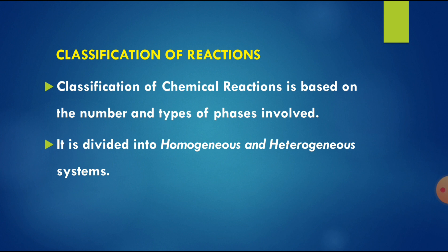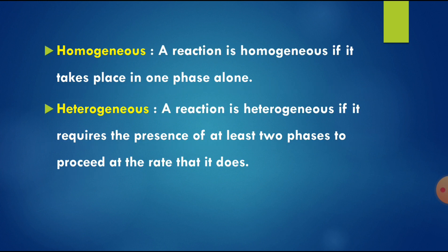Reactions are classified based on the number and types of phases involved, divided into homogeneous and heterogeneous systems. A reaction is homogeneous if it takes place in one phase alone. A reaction is heterogeneous if it requires the presence of at least two phases to proceed at the rate that it does — it can also involve more than two phases.